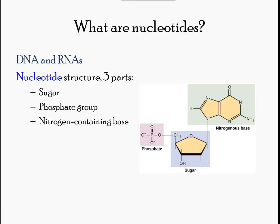Nucleic acids are key macromolecules in the continuity of life. They carry the genetic blueprint of a cell and carry instructions for the functioning of the cell. The two main types of nucleic acids are deoxyribonucleic acid (DNA) and ribonucleic acid (RNA). DNA is the genetic material found in all living organisms, ranging from single-celled bacteria to multicellular mammals.